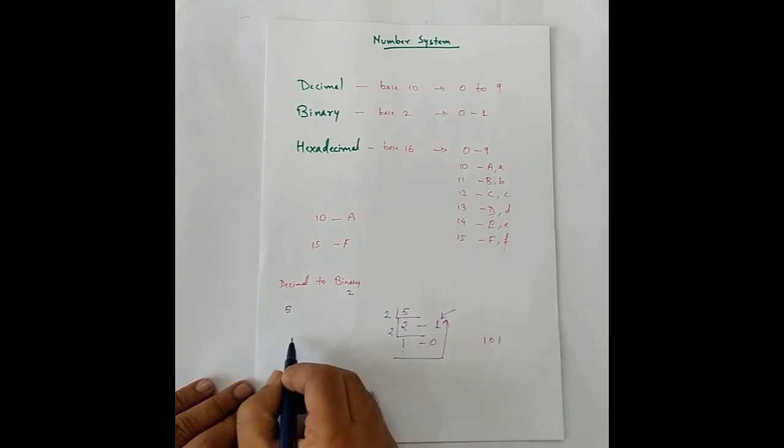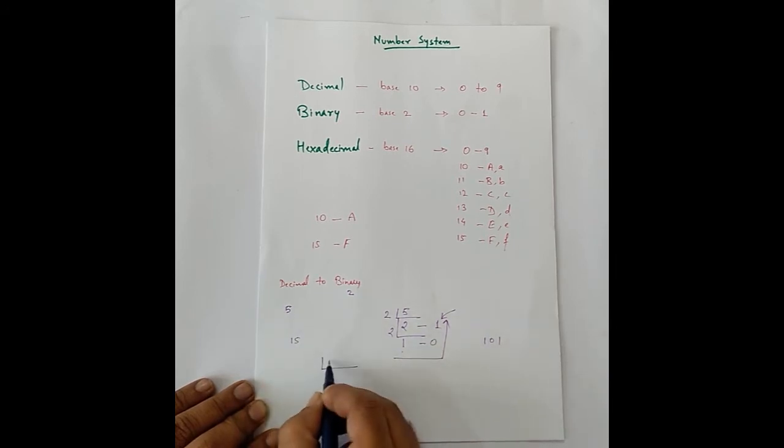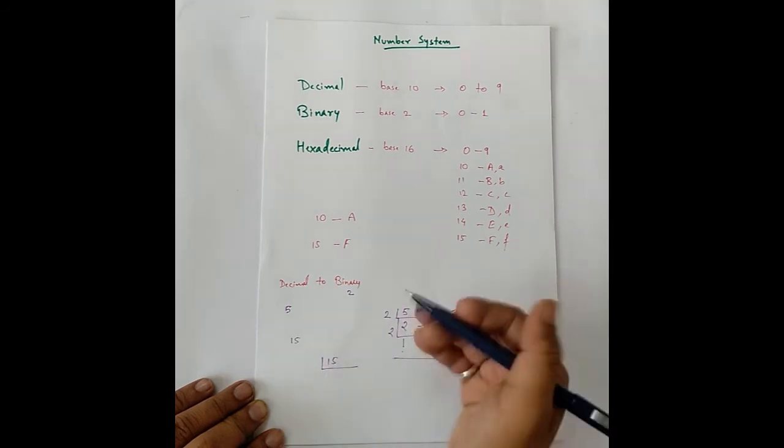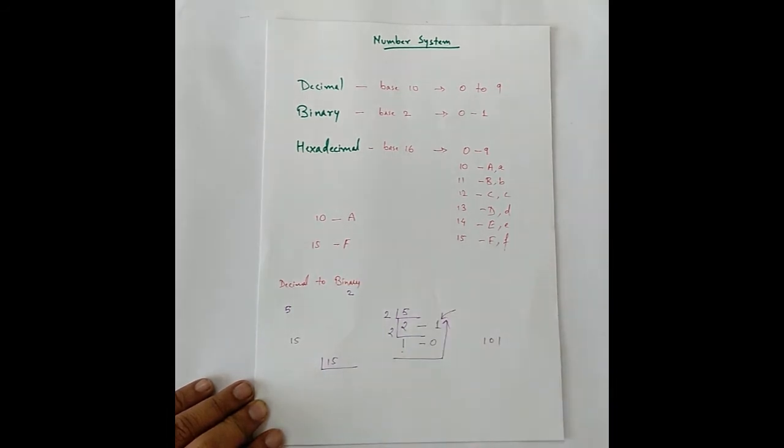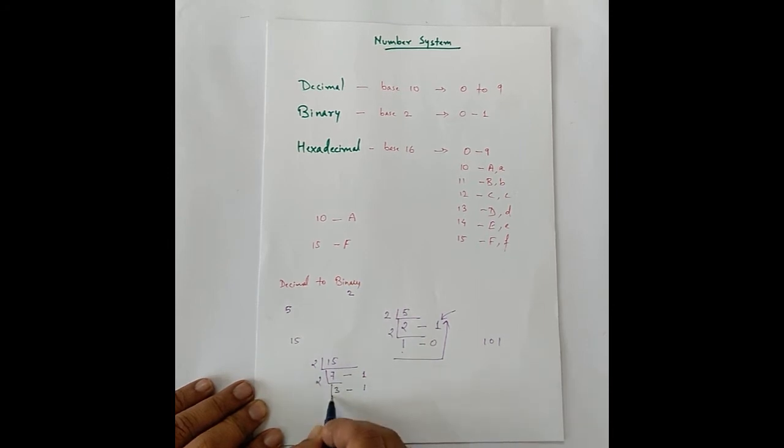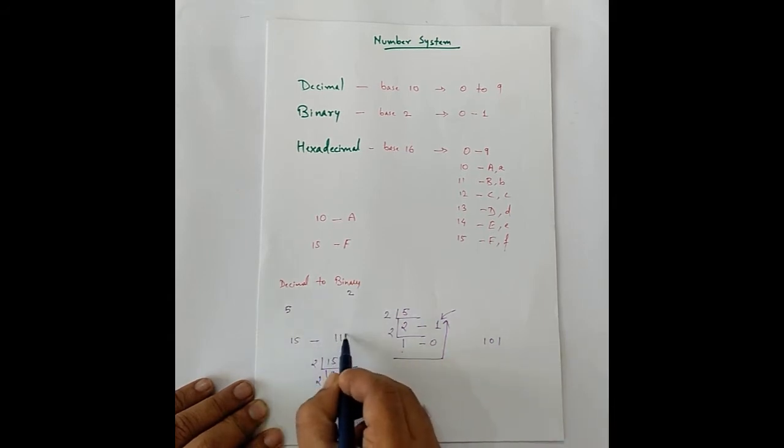Similarly, let's say we want to convert 15 to binary. We will do the same process. We keep on dividing until it is no further divisible. We divide it by 2: 7 times gives us 14 and the remainder is 1. We divide it once again: 3, the remainder is 1. 2, 1 times and the remainder is 1. So the binary of 15 is 1, 1, 1, 1.